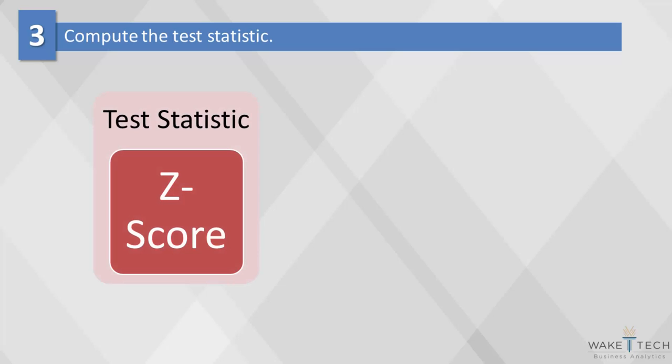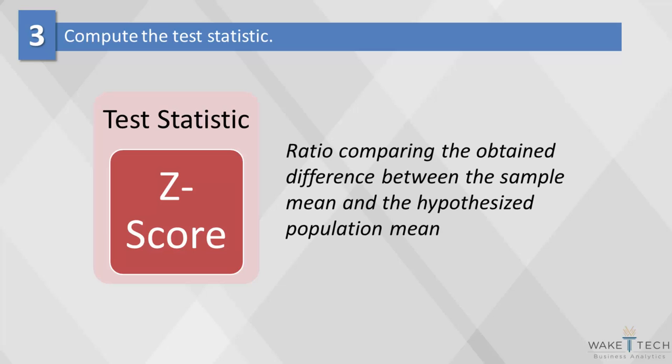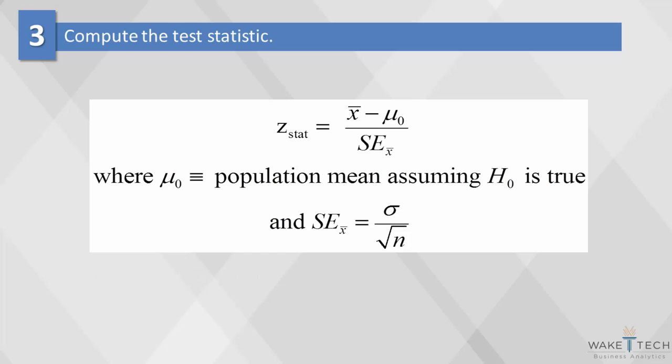Here we will use the z-score, which is a ratio comparing the obtained difference between the sample mean and the hypothesized population mean. This is an example of a one-sample test of a mean when the standard deviation sigma is known.